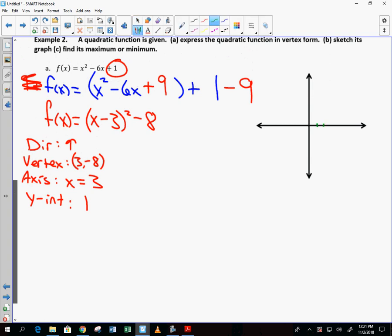So I'm going to make an 8 by 8 graph. I plot 3, negative 8. I have an axis of symmetry that goes right through there. I have a y-intercept of 1. I could reflect that over the axis of symmetry to get another point right over here.